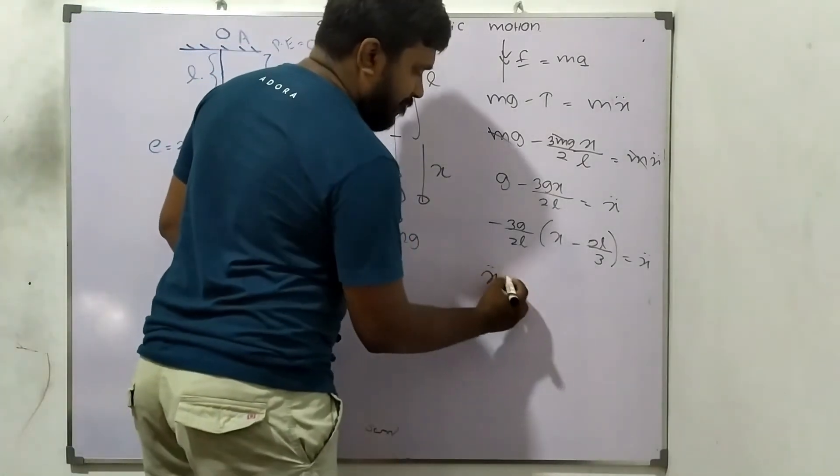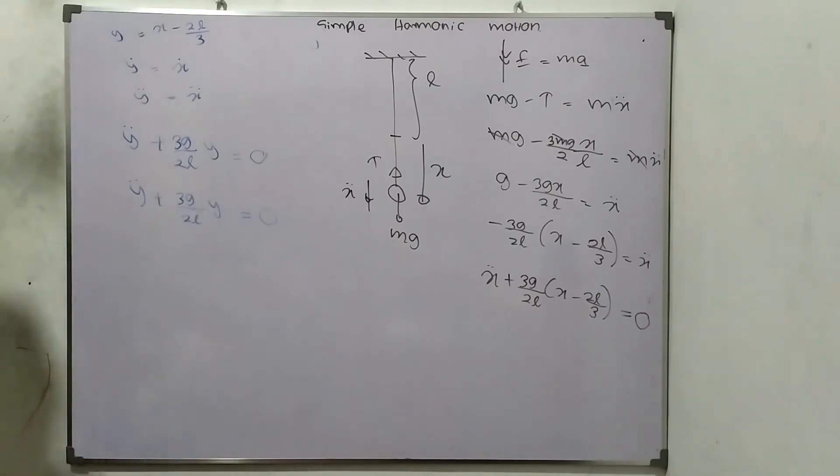So then, 3G over 2L. So this is look like a characteristic equation. So actually, assume X minus 2L over 3 as Y. What will happen if you differentiate it by time? So Y double dot is equal to X double dot. So 3G over 2L Y equal to 0. That is like omega squared.